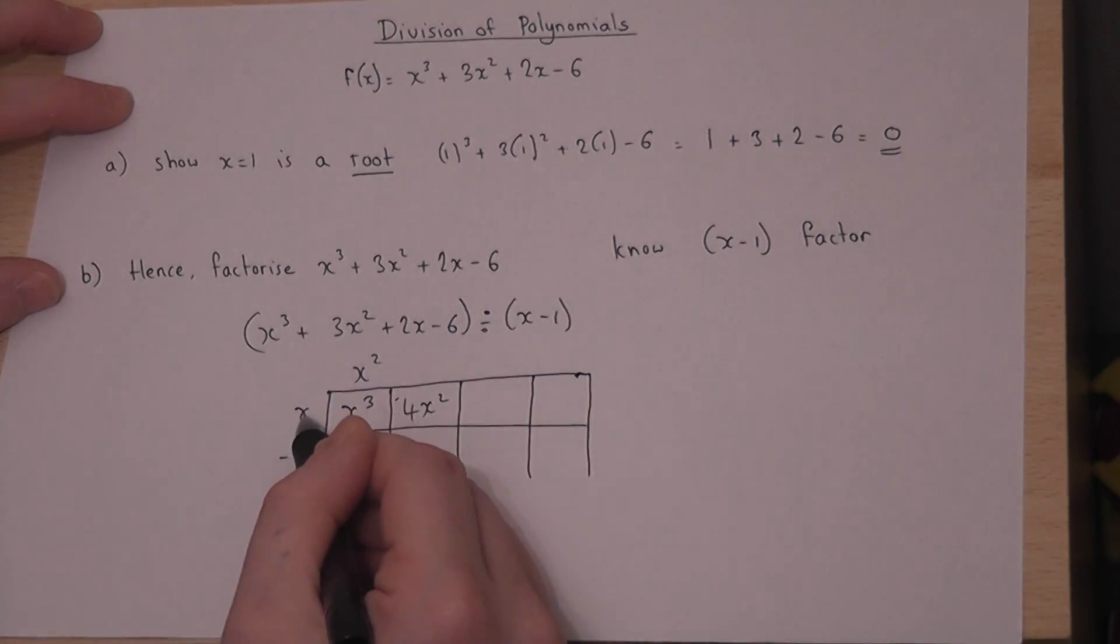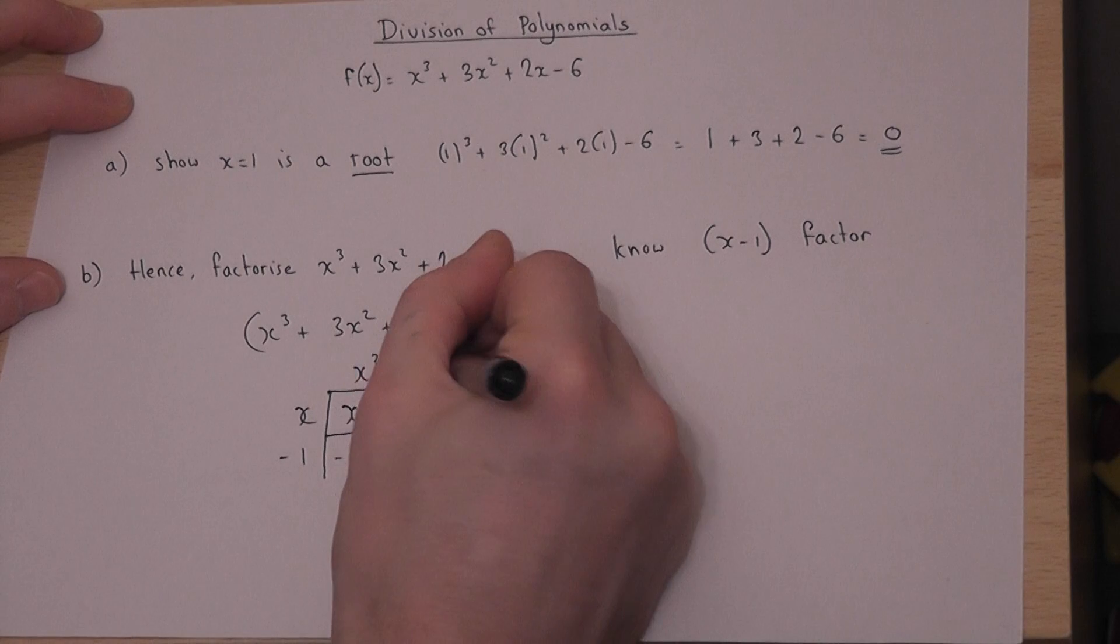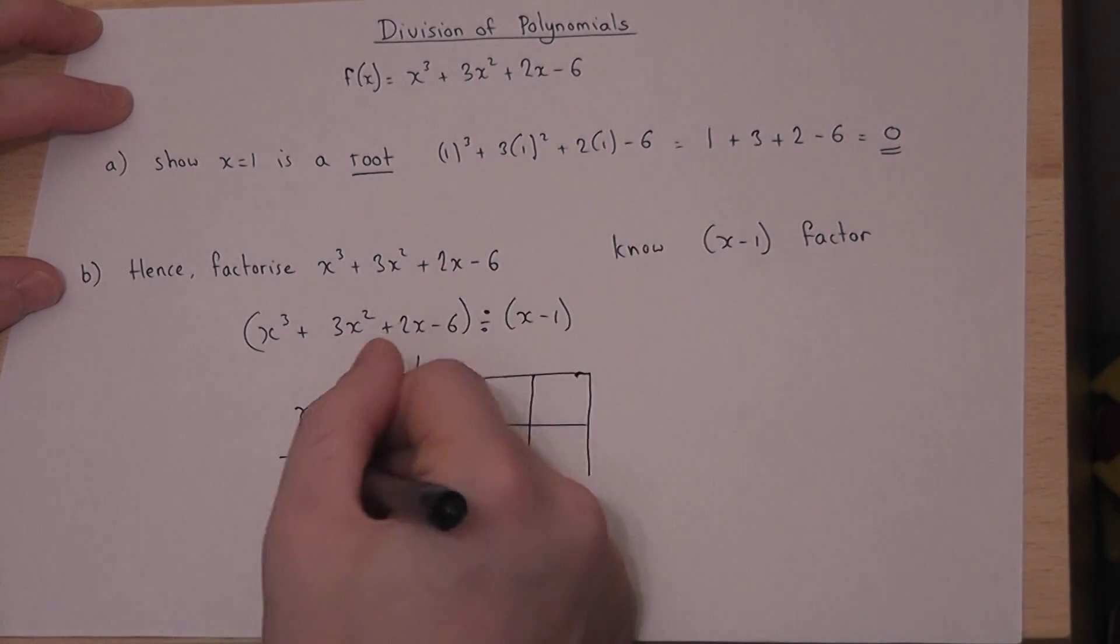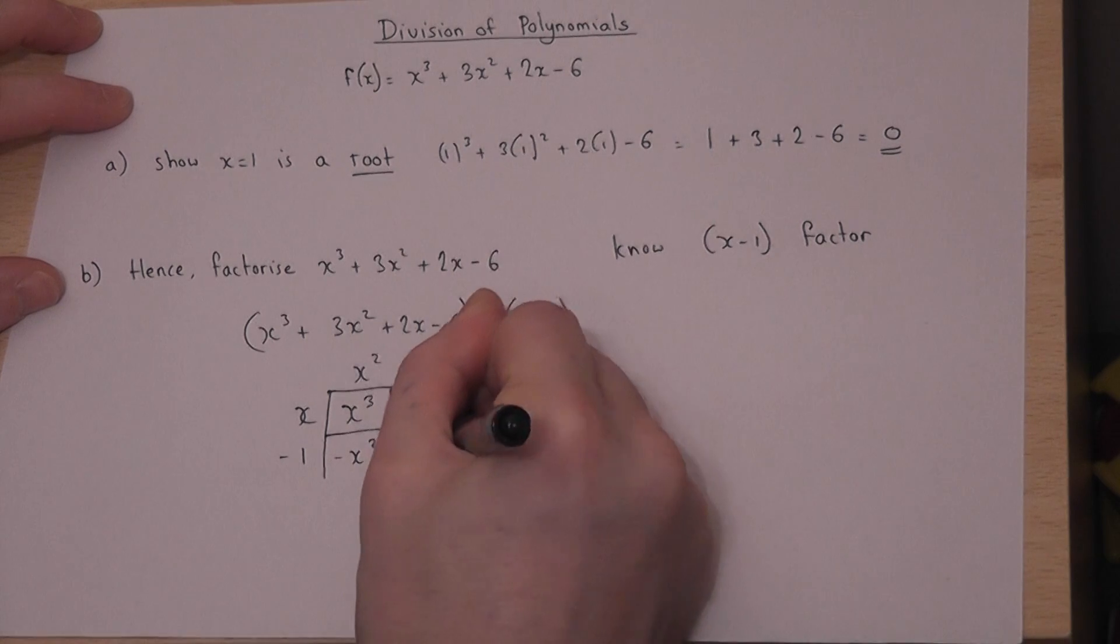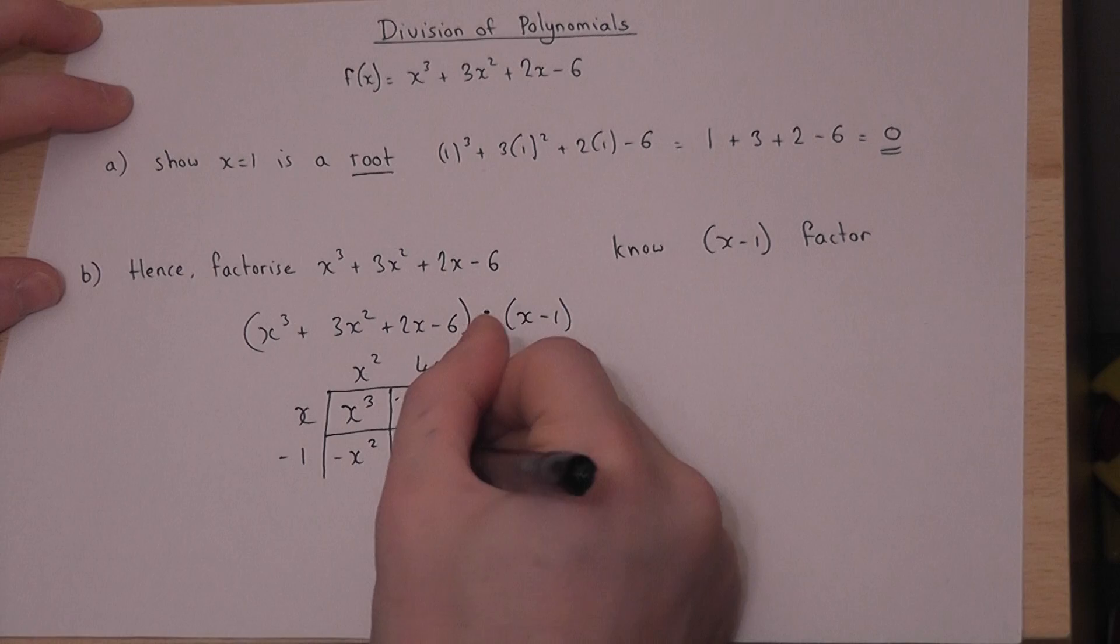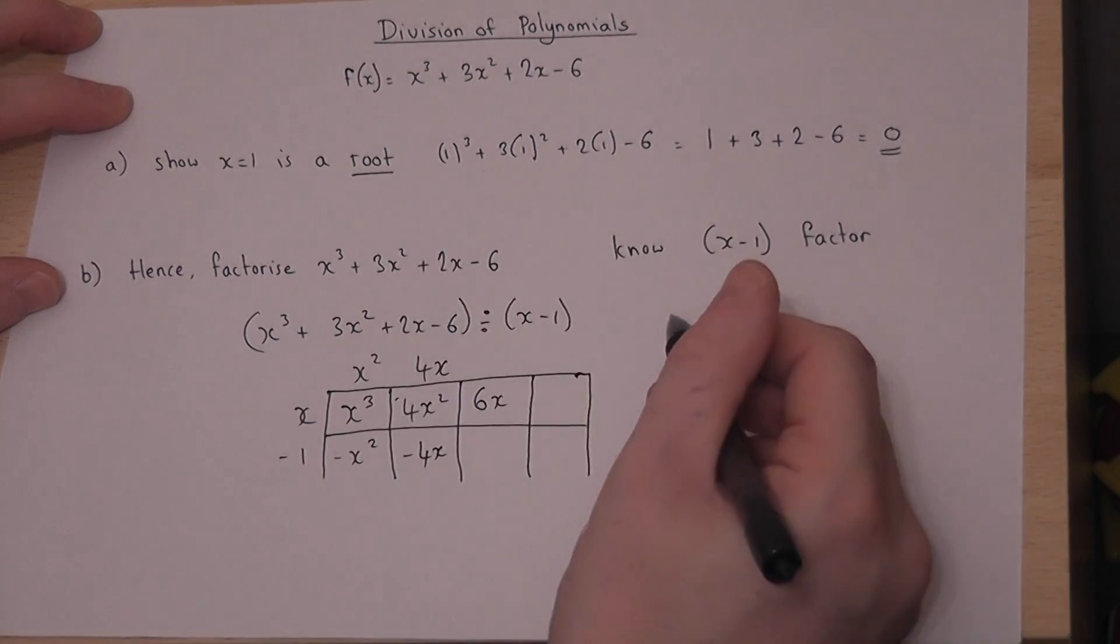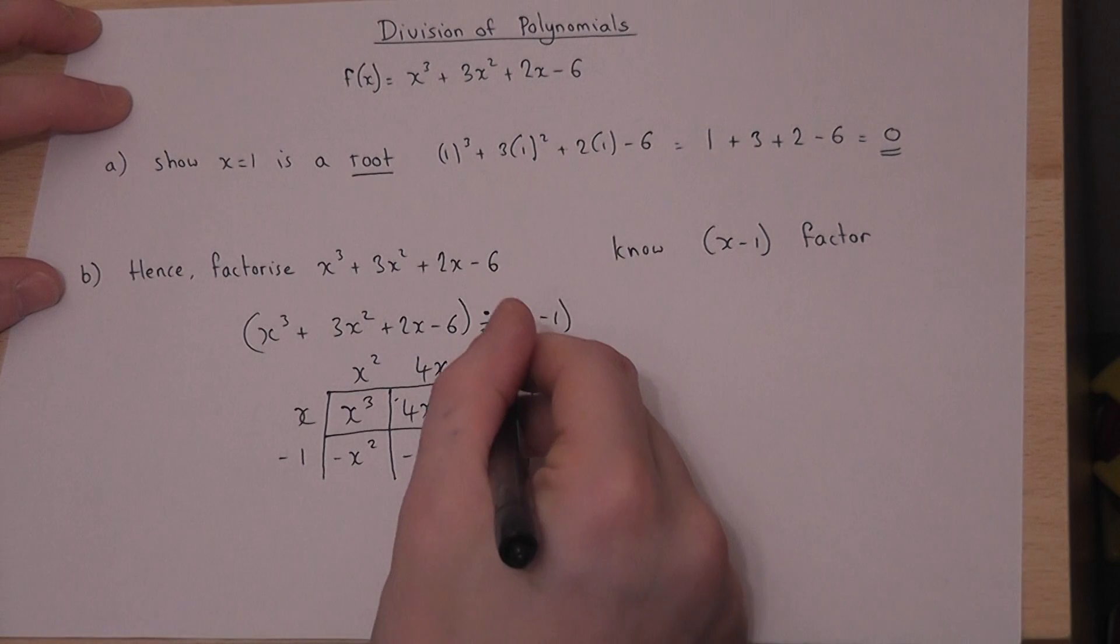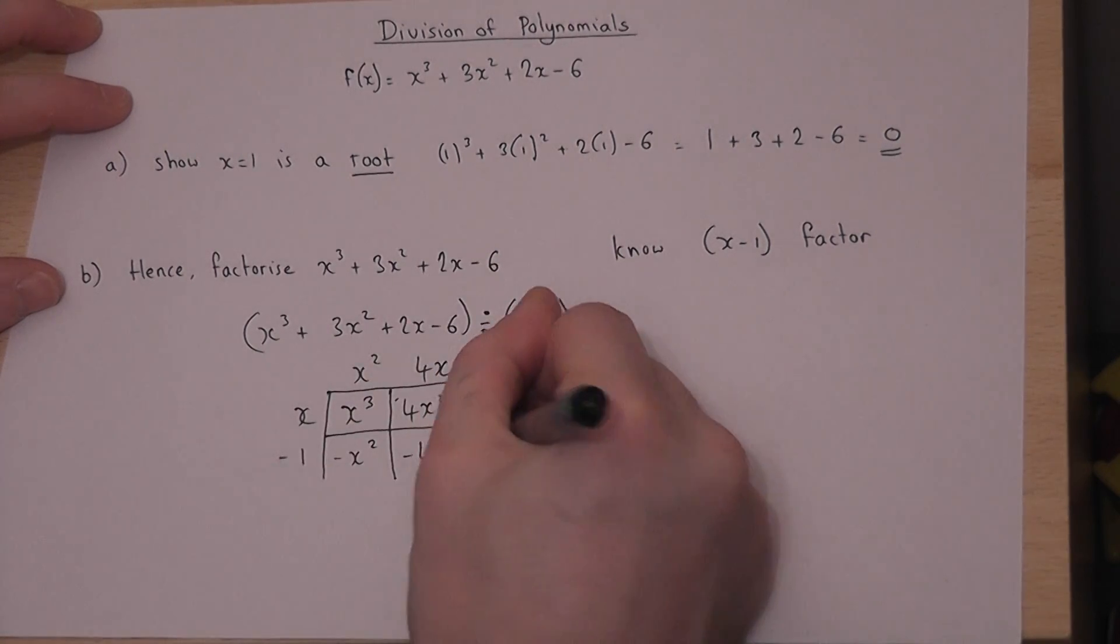There's an x there, so to get to 4x squared requires a 4x. 4x times minus 1 is minus 4x, but I need a 2x, so I need another 6x. These two terms combine to give me 2x. There's an x there, so I need a 6. And 6 times minus 1 is minus 6.